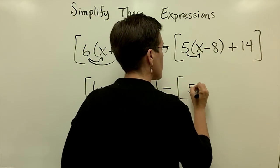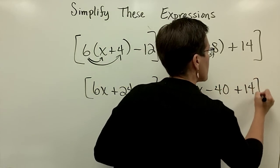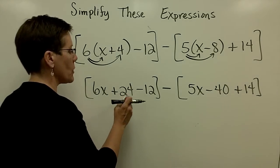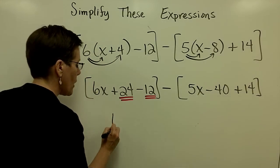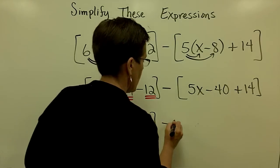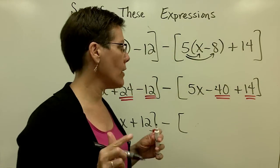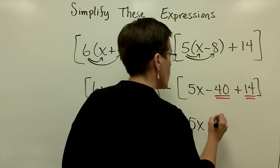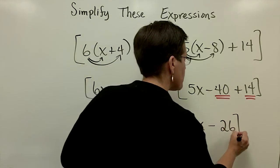So I must distribute the 5 times x and get 5x. And 5 times a minus 8 and get a minus 40. I prefer, it's not necessary, but I prefer to collect my like terms within my grouping symbols before I go any further. So this positive 24 minus 12 is 12. So I have a 6x plus 12 in that group. And in this group, this minus 40 and a positive 14 have unlike signs. So a negative 40 and a positive 14, let's see, that would be 26 is their difference with the minus sign having more pull of these two.